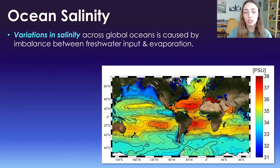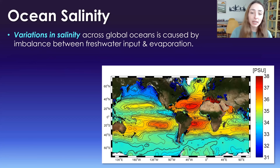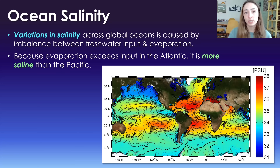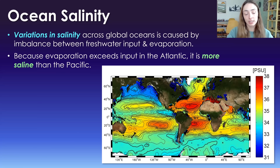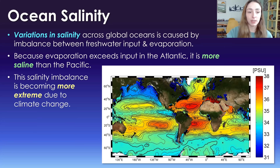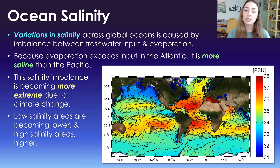Salinity in the oceans is not a spatially consistent value. The oceans have an average salinity, but salinity varies quite a bit across different ocean basins. These variations are due to an imbalance between freshwater input and evaporation. For example, because evaporation exceeds the input of river water and rain into the Atlantic, the Atlantic is more saline than the Pacific. And this salinity imbalance is actually becoming more extreme due to climate change — low salinity areas are becoming lower, and high salinity areas are becoming higher.